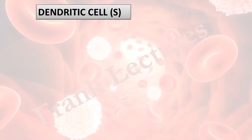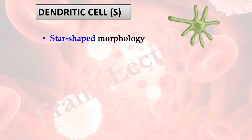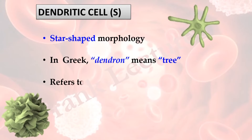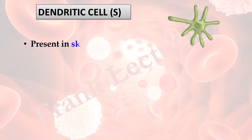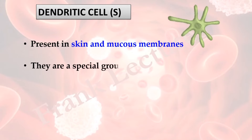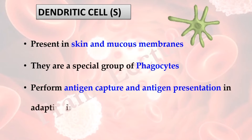Dendritic cells: the characteristic feature of dendritic cells is their star-shaped morphology. In Greek, 'dendron' means tree, referring to their branched appearance. Dendritic cells are found in most tissues of the body; they are present in skin and mucous membranes. They are a special group of phagocytes that perform antigen capture and antigen presentation in adaptive immunity. Details of this will be studied in a separate video lecture.